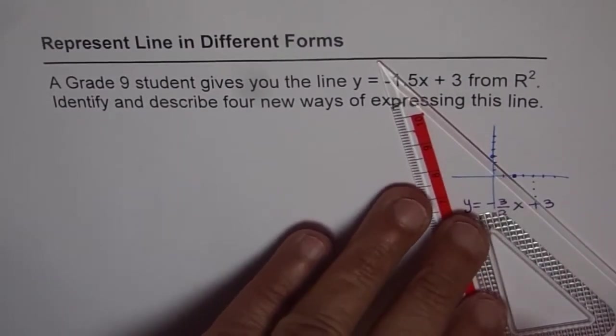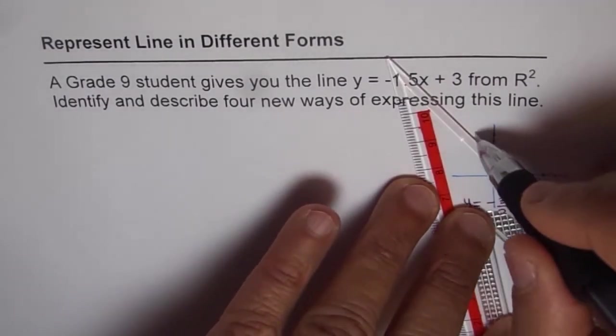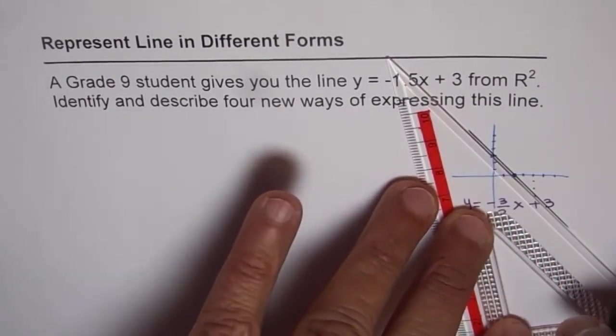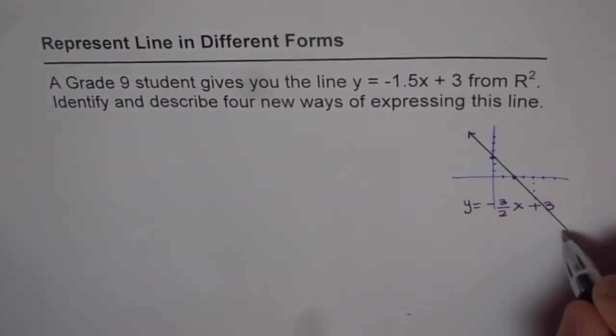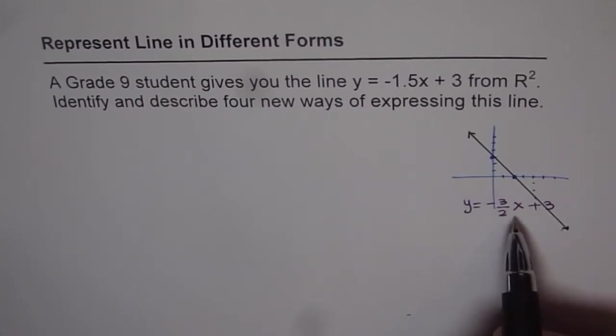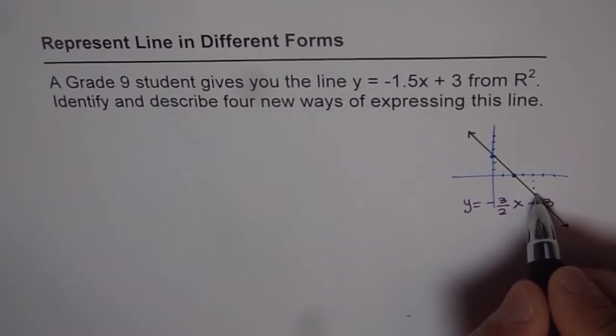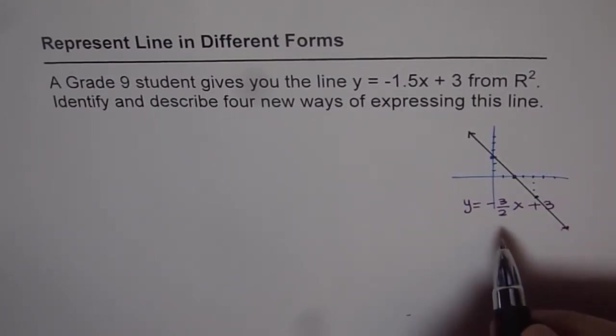That is how we have learned what lines are. I am joining these 3 points and I get my line. This equation is represented by y equals -3/2x + 3. As you can see, this is the equation in slope-intercept form, which a Grade 9 student fairly well understands.